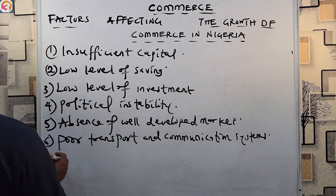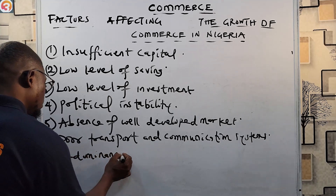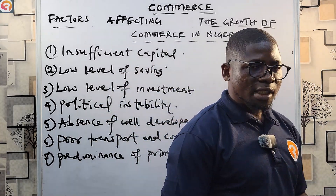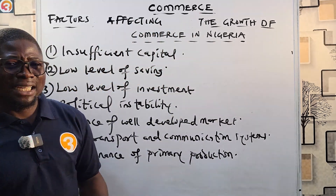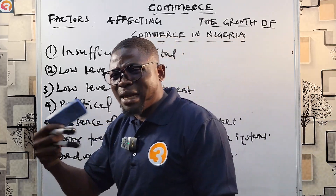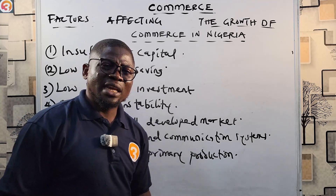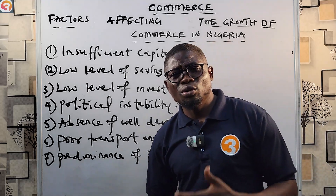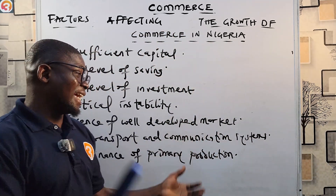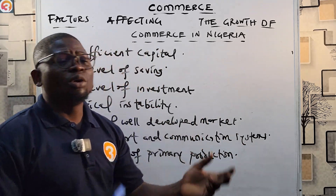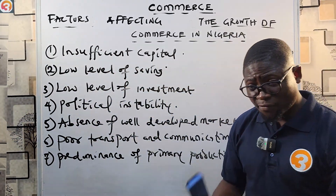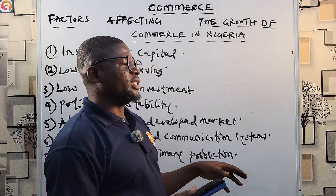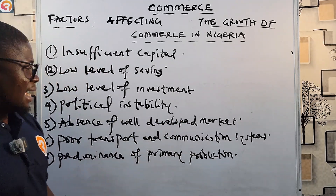Number seven is predominance of primary production. In this situation, we carry out extraction activities like mining, but we do not have factories that process what we extract into higher-value products. For example, there is gold in this country but no factories to refine it and generate more funds — we prefer to just extract and sell raw. With crude oil, we drill but we do not refine it here; we have no functional refinery in Nigeria except the Dangote refinery which is about to open. This is affecting the growth of commerce in Nigeria.